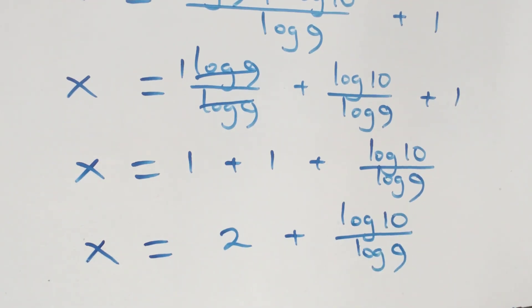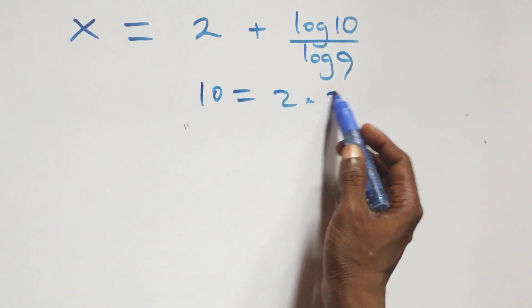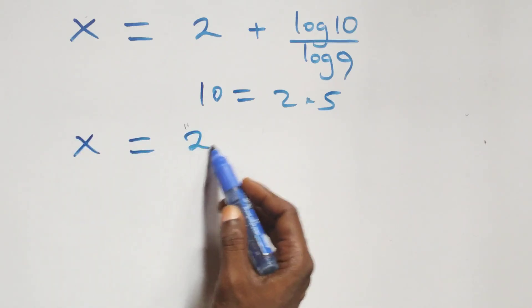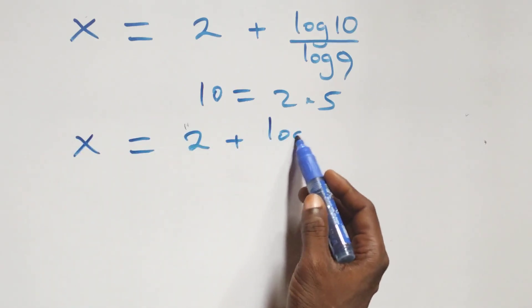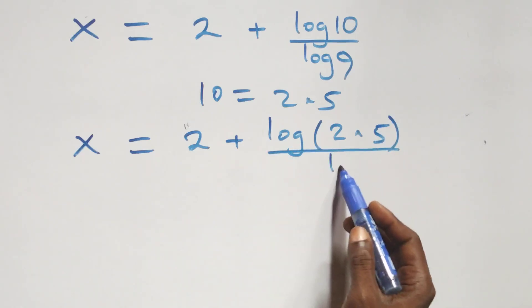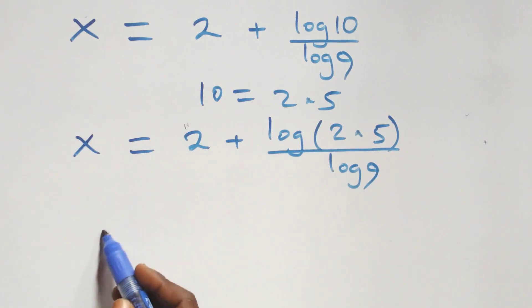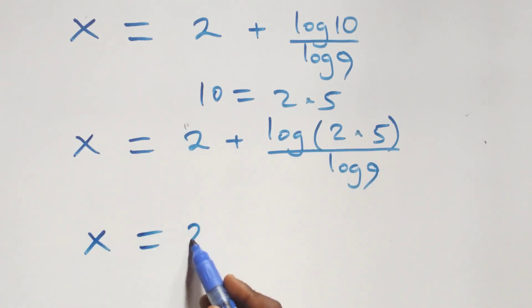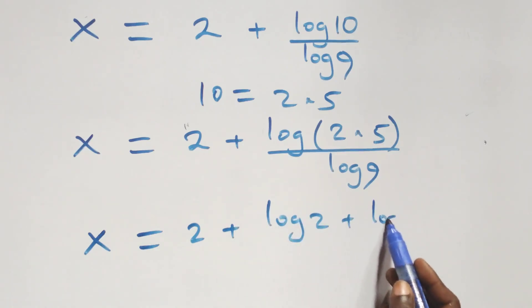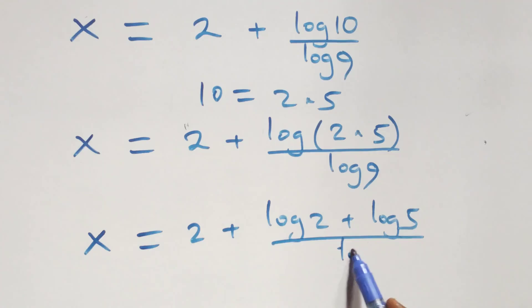Next step, also 10 can be written as 2 times 5. We have x equals to 2 plus log of 2 times 5, over log 9. This also follows the log rule, and we have x equals to 2 plus log 2 plus log 5, over log 9.